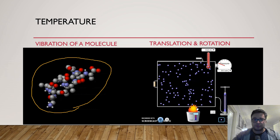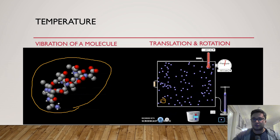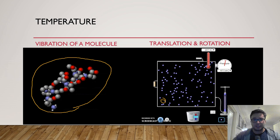In this gas system it is possible that one of the molecules is almost still and one of the molecules is moving really fast. So it's a statistical quantity.